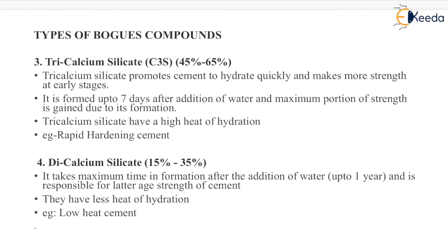Next is tricalcium silicate i.e. C3S, whose percentage varies between 45% to 65%. Tricalcium silicate promotes cement to hydrate quickly and makes more strength at early stages. It is formed up to 7 days after addition of water, and maximum portion of strength is gained due to its formation. Tricalcium silicate has a high heat of hydration. An example is rapid hardening cement.